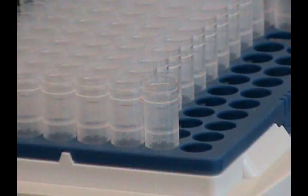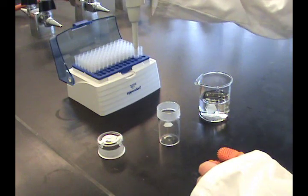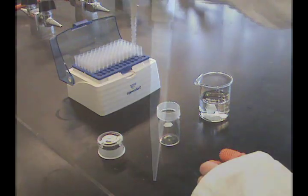Acquire the proper sized tips for the pipette to be used. Attach the tip by placing the plastic shaft of the pipette into the top of the tip and pressing down firmly. The tip should fit snugly but should not reach the bottom of the ejector arm.